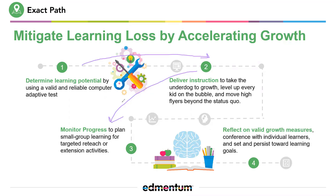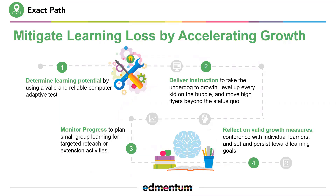As the students work through that instruction, we integrate progress monitoring data so that educators can have a good understanding of the type of movement that students are making. And this creates a cycle — when we then measure the students again about every 12 to 16 weeks, it allows us to reflect and go back to step one to make the next determination of where the students are going to go over the next 12 to 16 weeks.